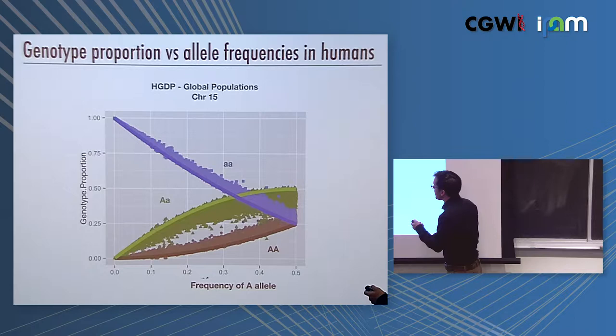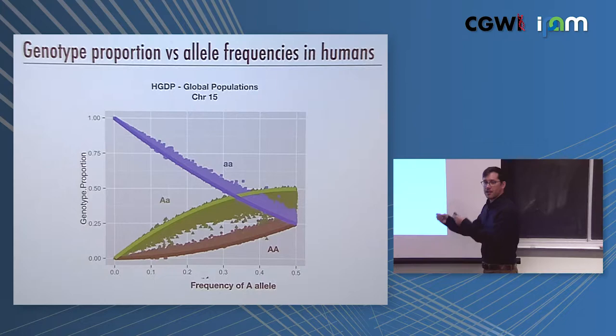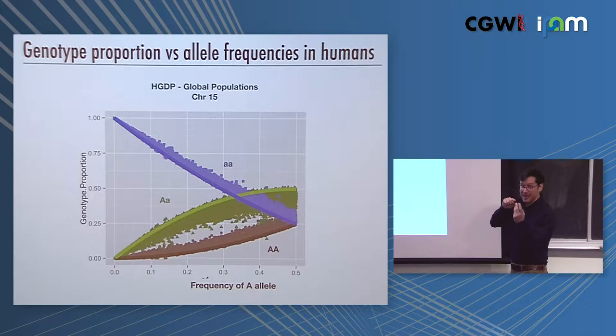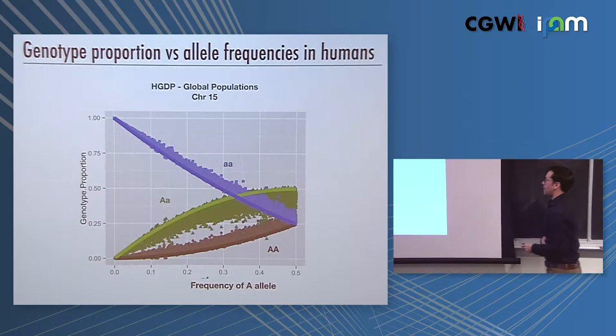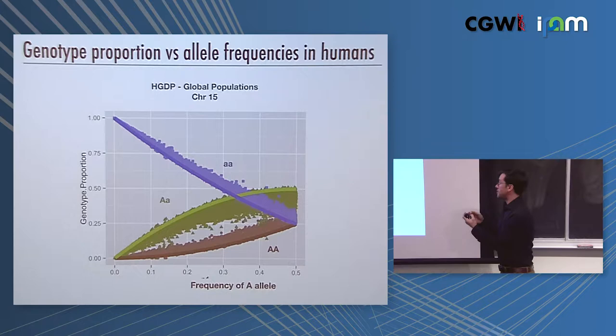This is a figure that we generate as part of a workshop that we do with incoming students. I have the students plot something very simple, genotype proportions versus allele frequencies. The colors represent, from SNP data, the proportions of little a, little a genotypes as a function of frequency in the data set. You calculate for each SNP an allele frequency, for each SNP the three different genotype proportions, and then plot the three genotype proportions. What you see in SNP data from human data from populations across the globe is this extreme regularity. There's a relationship between genotype proportion and allele frequency.